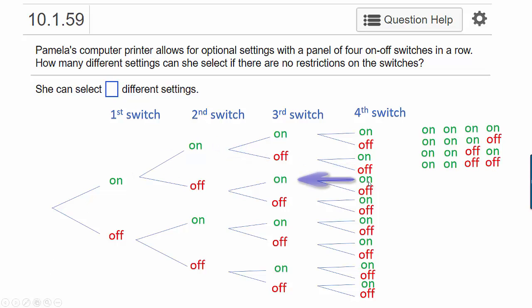In the fifth scenario, the fourth switch is on, the third switch is on, the second switch is off, and the first switch is on. In the sixth scenario, we have off, on, off, on. Reading backwards. And we can continue in this way, reading each of the branches from the end to the beginning.